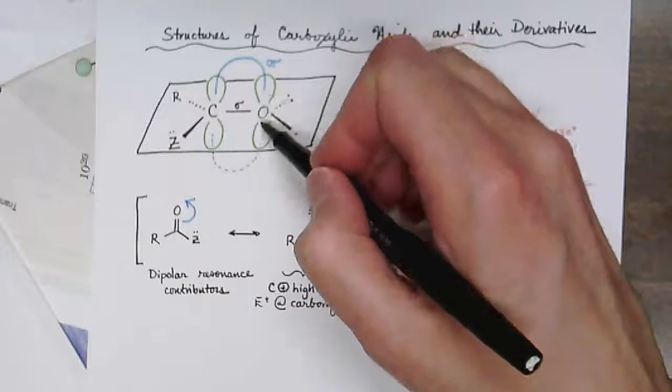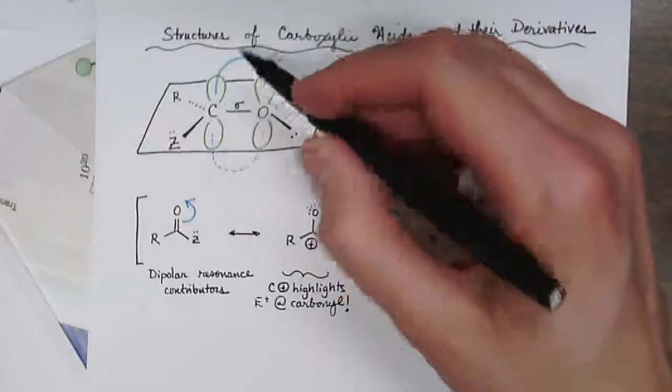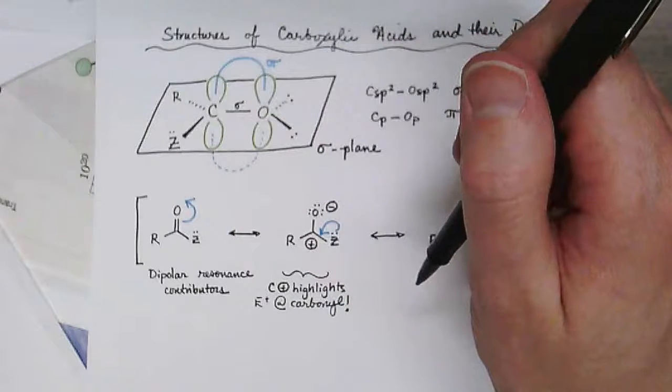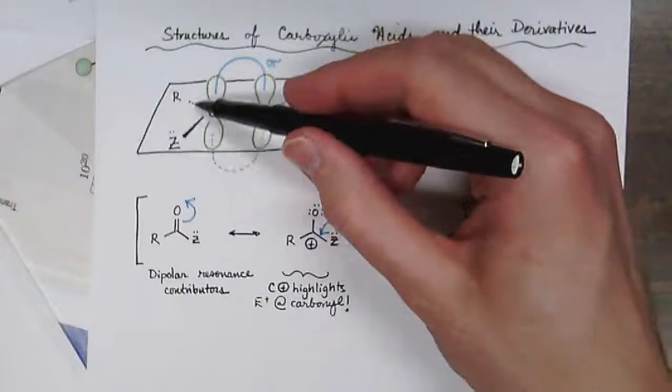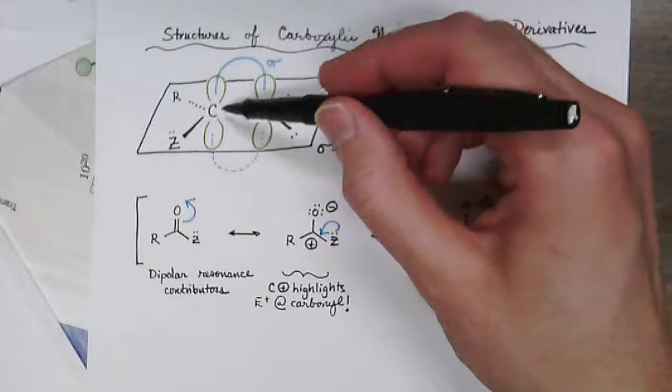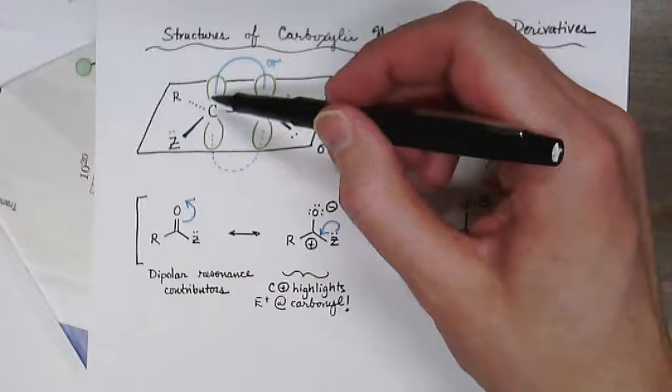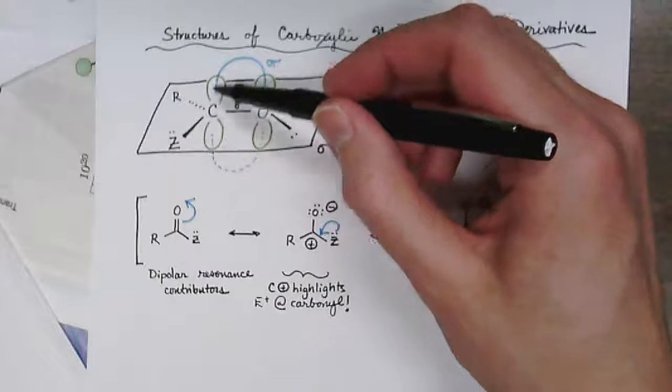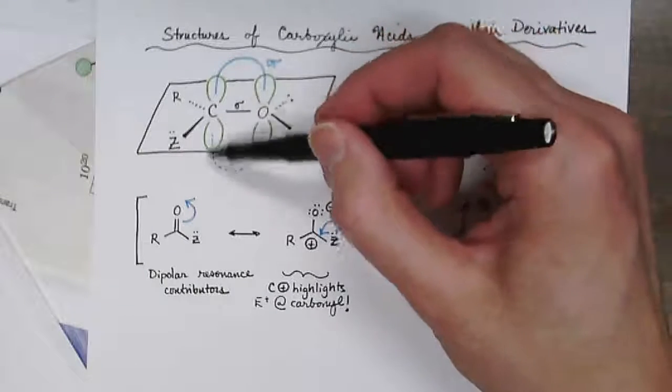so that we can see the sigma plane canted and the p orbitals perpendicular or orthogonal to the sigma plane. Both the carbon and oxygen atoms of the carbonyl group are sp2 hybridized, and there are three sp2 hybridized orbitals that overlap to form a sigma bond with the carbon, and then the leftover p orbital overlaps with the p orbital of the oxygen to form the pi bond of the carbonyl.